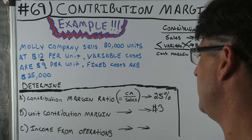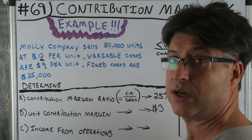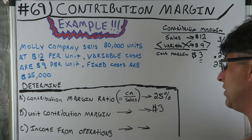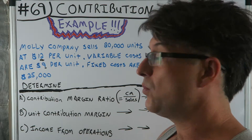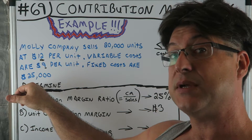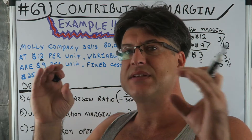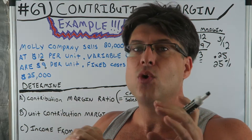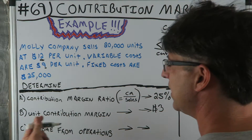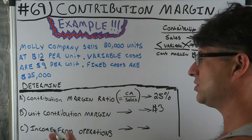Every unit we sell, we make $3. Our fixed costs are $25,000, so we need to sell enough units to cover those $25,000 in fixed expenses and make more. Since fixed costs stay the same and don't fluctuate, we can figure out what we need to do to get there.